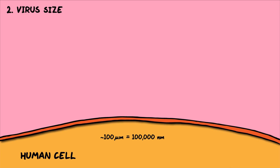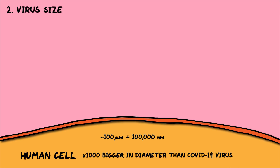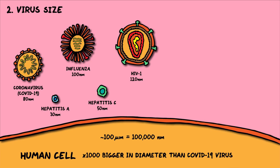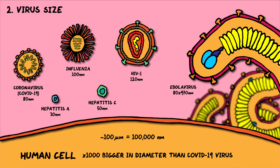Viruses are incredibly small. For example, an average human cell is a bit smaller than a tenth of a millimetre, or a hundred micrometres. Viruses are around a thousand times smaller than that, ranging from around 20 nanometres upwards. Here are a few virus particles drawn to scale: Hepatitis A, Hepatitis C, Coronavirus, Influenza, HIV, and the humongous Ebola virus.